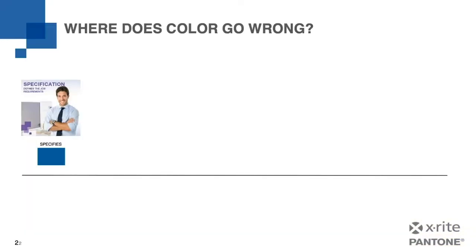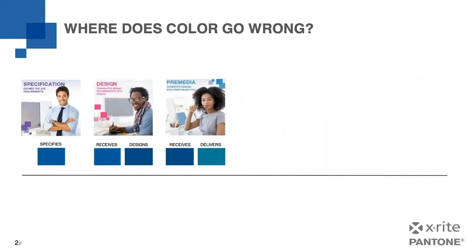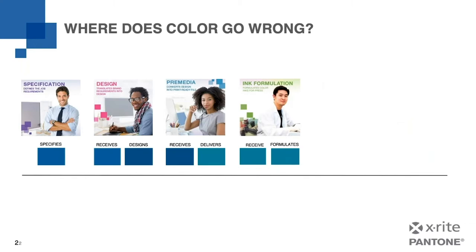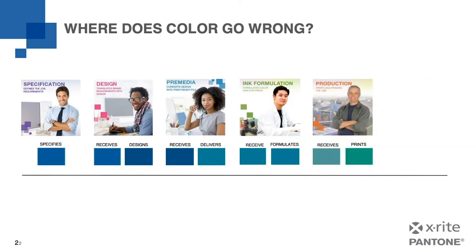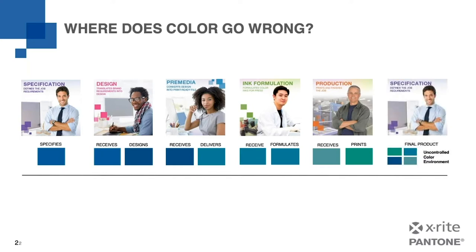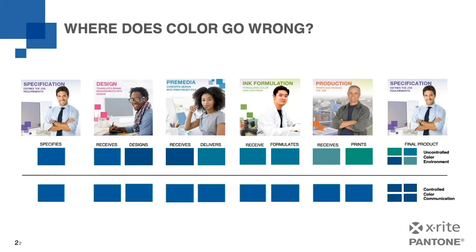Let's start out with looking at your supply chain and where color goes wrong. Near the beginning of any print project, the desired colors are specified. In some cases, these colors are not communicated well throughout the supply chain. In other cases, the color is simply not achievable with the inks or substrate that are specified, but they're used anyway. In each step, there's a chance that ambiguous color descriptions or production limitations will lead to a shift in color and thus disappointment. However, with better planning for achievable color specifications and unambiguous color communication, the results will be more predictable and repeatable.